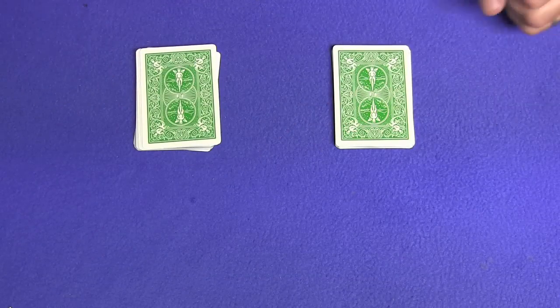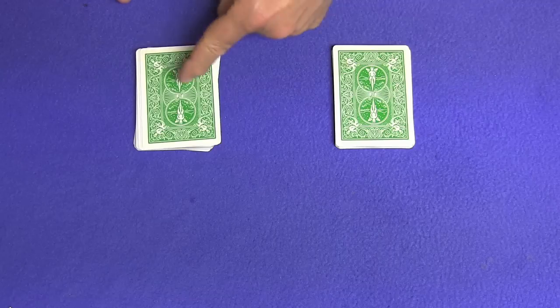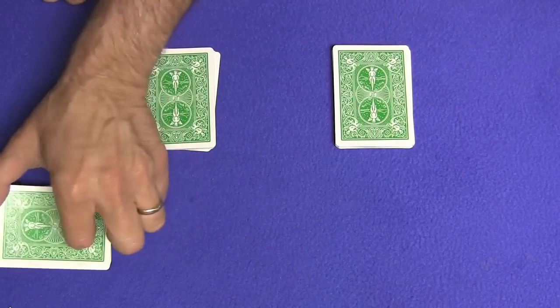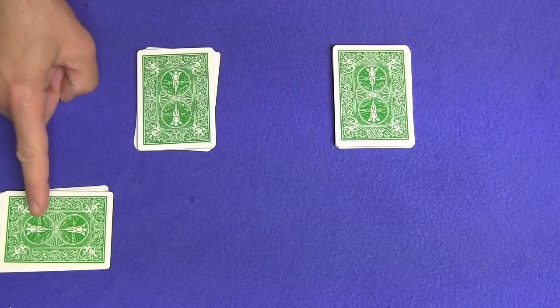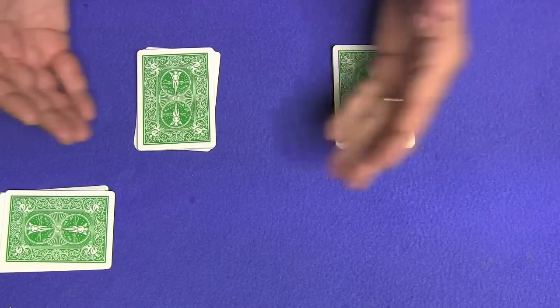So which pile would you like to select the random number? This one? Okay, so take off a certain amount of cards, set them to the side, and this will be the random number at the end that your selected card will be at.